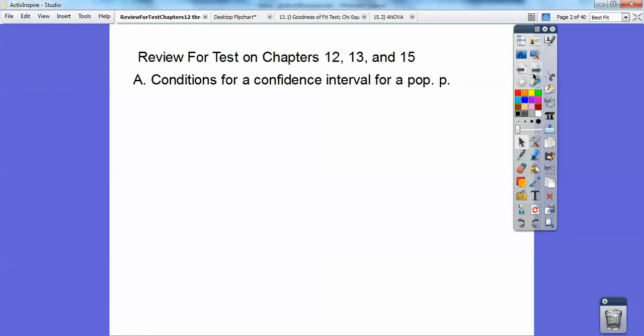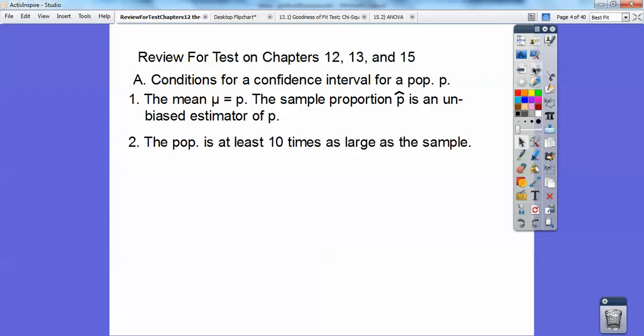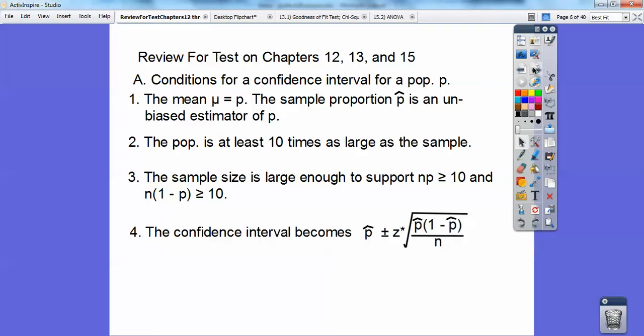So conditions for confidence interval for population proportion P, your mean has to equal your P, which is your proportion. The sample proportion, which is your P hat, is an unbiased estimator of your population proportion. Population has to be at least 10 times as large as the sample and the sample size has to be large enough to support whatever your sample size is times P. It has to be greater than or equal to 10 and then the sample size times 1 minus P also has to be greater than or equal to 10. And if that works out, then your confidence interval becomes your P hat plus or minus your Z star from your confidence interval level and then square root of P hat, 1 minus P hat divided by N.